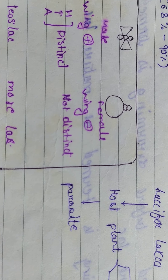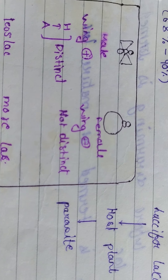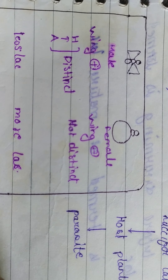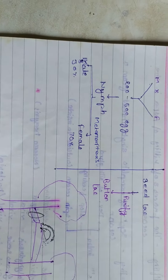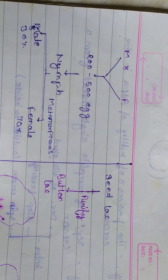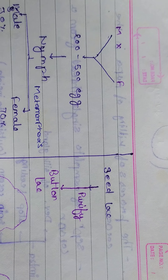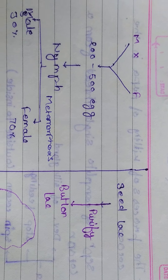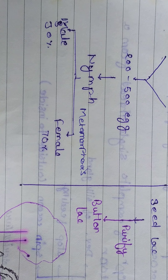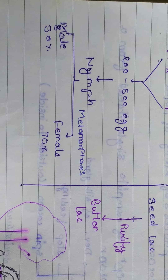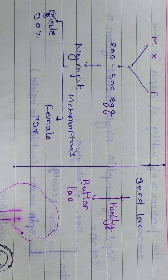The male lac insect is difficult to distinguish clearly. The female is the primary producer of lac. Each female lays 200 to 500 eggs that change into nymphs. The population consists of approximately 30% male and 70% female lac insects.